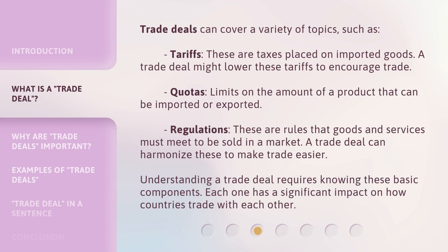Trade deals can cover a variety of topics, such as tariffs — these are taxes placed on imported goods, and a trade deal might lower these tariffs to encourage trade. Quotas — limits on the amount of a product that can be imported or exported. Regulations — rules that goods and services must meet to be sold in a market; a trade deal can harmonize these to make trade easier. Understanding a trade deal requires knowing these basic components. Each one has a significant impact on how countries trade with each other.